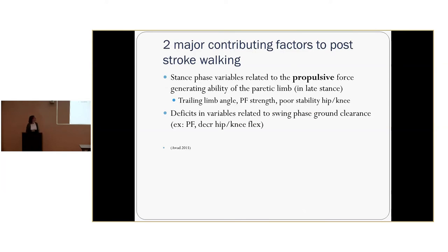Studies have pointed to two major contributing factors that make people less efficient walking post-stroke. The first is stance phase variables related to the propulsive force-generating ability of the paretic limb — specifically in late stance, are they able to propel themselves forward? Factors include the trailing limb angle, plantar flexion strength, and overall mobility in hip and knee to set up for that late stance phase. The second is overall deficits related to swing phase ground clearance.